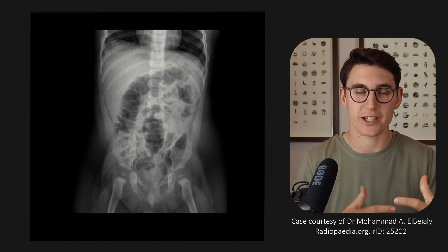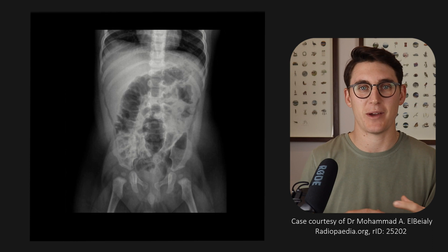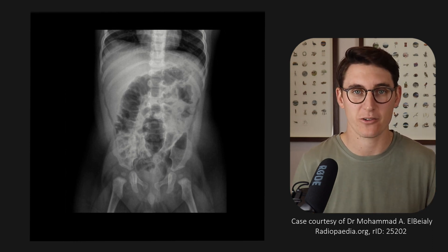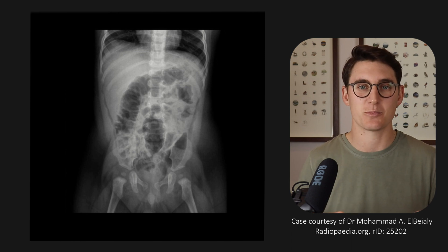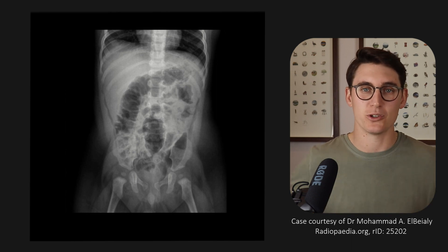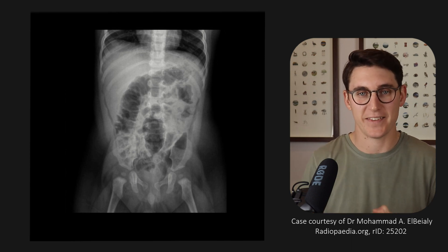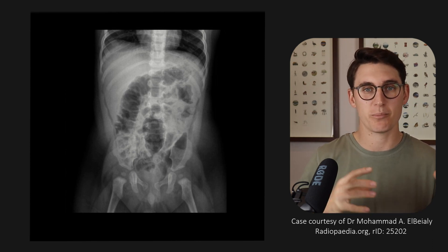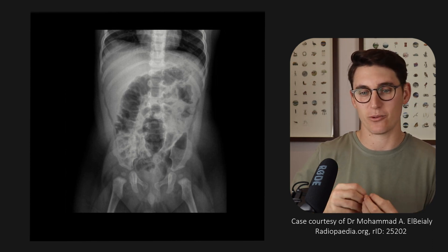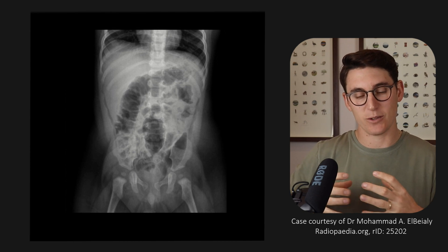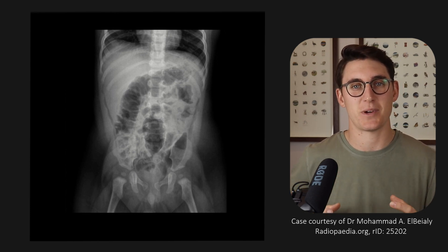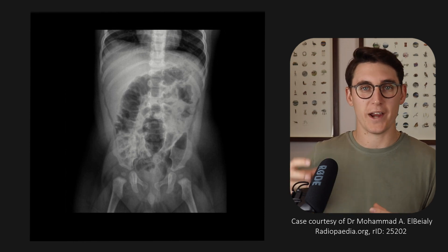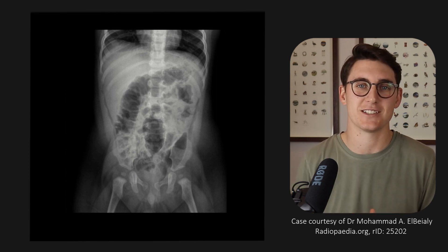I hope you can now look at the retroperitoneum and be able to split it into its three compartments: the anterior pararenal space, the perirenal space, and the posterior pararenal space, and identify the various things that fill those spaces. Whenever we have pathology — for example if a renal cyst bursts — we will see it will only fill those particular spaces. So when you know the spaces, it becomes easier to identify where the pathology is.